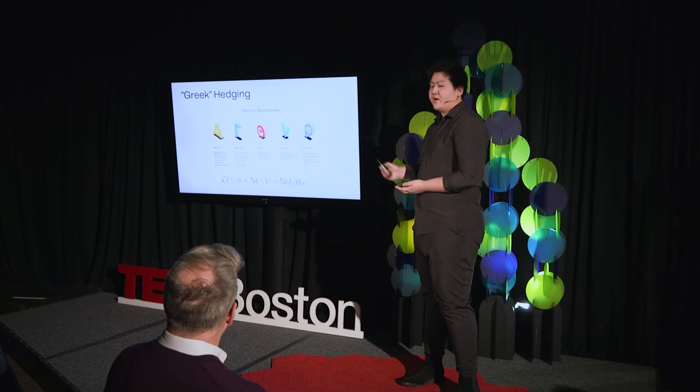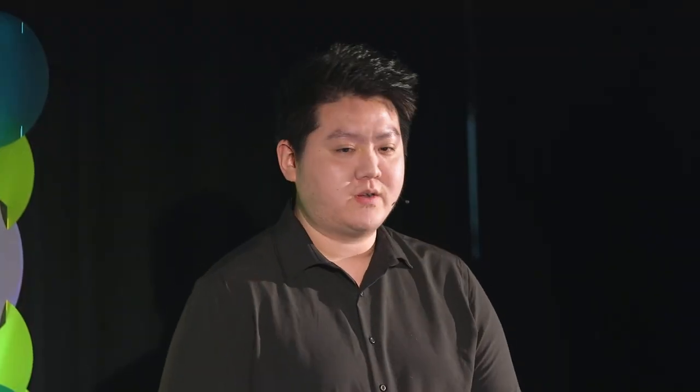Many financial analysts in the current financial industry standard try to model the markets using Greek values, and they try to look at an option and see what its sensitivity is to many of these factors. But in reality, there are probably a lot more factors. It's very difficult for humans to come up with a very accurate model to forecast and model the markets.